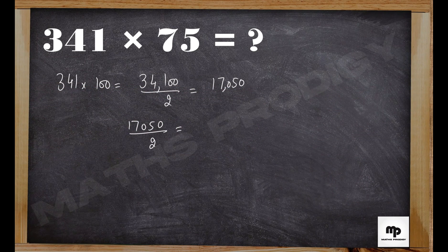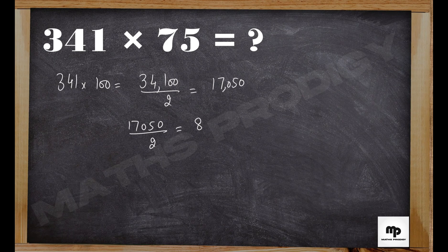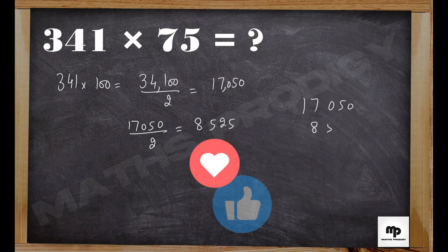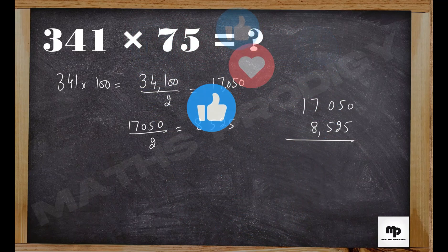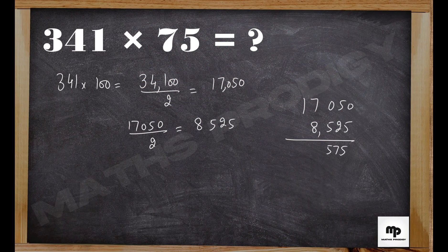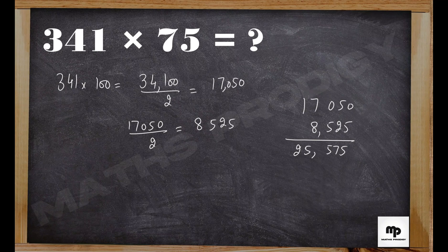Which is 8,525. The last step uses mental math and is more complex with the carry method - it's 575 and 25, so that will be 25,575.